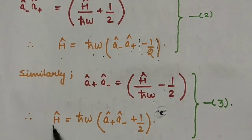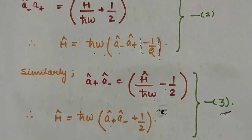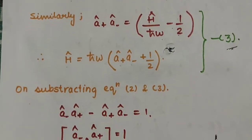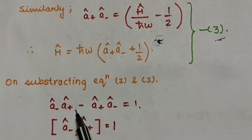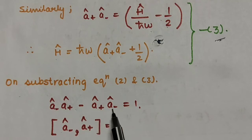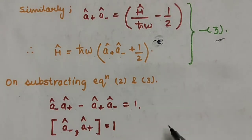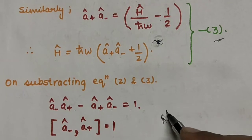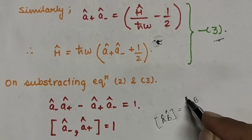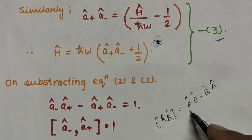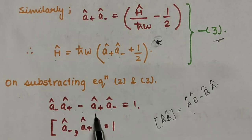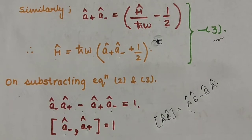So H = ħω(a+a− + ½) is equation 3. On subtracting equation 2 from equation 3, we get a−a+ − a+a− = 1. Since the commutator [A, B] = AB − BA, this gives us [a−, a+] = 1. This is the commutation relation between the ladder operators. For the eigenvalue equation, Hψ = Eψ, where H is the Hamiltonian and ψ is the wave function, E is the energy eigenvalue.